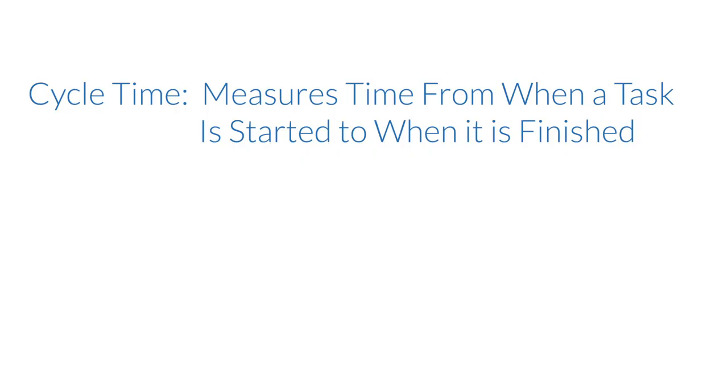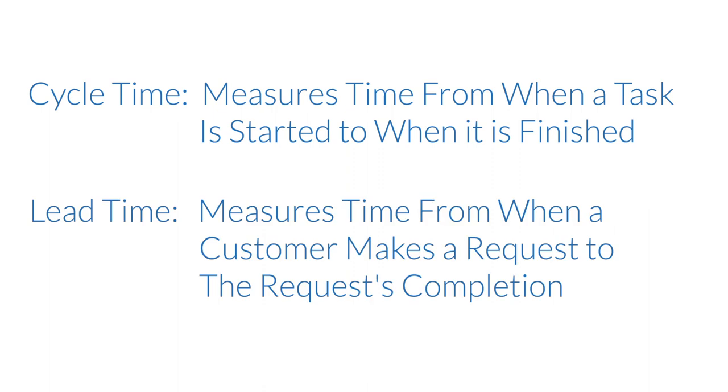What is lead time? The lead time is the time from the moment when the request was made by a client and placed on a board to when all work on this item is completed and the request was delivered to the client. So it's the total time the client is waiting for an item to be delivered. To clarify, cycle time measures the time between when a task is started to when it is finished, while lead time includes the time from when a customer makes a request to the request completion.